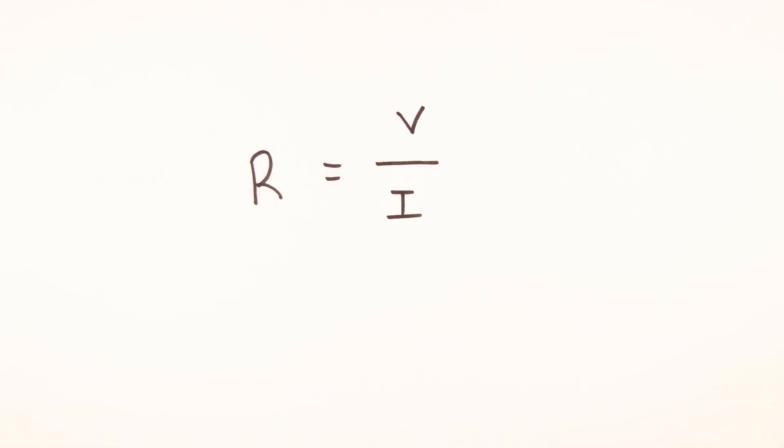The equation for resistance is R equals V over I, where R is measured in ohms, V in volts and I in amps.